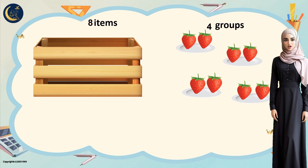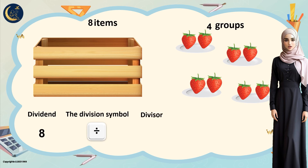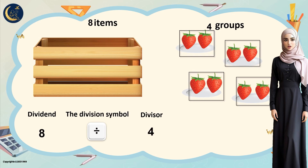We finished distributing the items equally. Let's write the division sentence together. We write the dividend: how many strawberries? Eight. Then the division symbol. Then the divisor: how many plates? Four. Let's read the division sentence: eight divided by four. How much did we put in each plate? Two. So eight divided by four equals two.